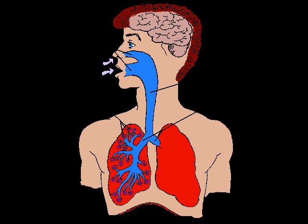Rings of cartilage in the wall of the trachea and bronchi provide support. It is strong but flexible, and it stops the trachea and bronchi from collapsing when you breathe in and pressure drops.